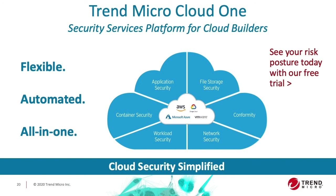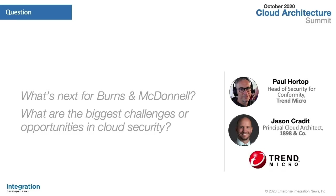Q&A: What's next for Burns & McDonnell? Jason: We're going to continue to build. We have ideas in the energy space around helping customers monitor and understand capital asset planning. We can take tools into heavily regulated environments feeling more secure because we have partners like Amazon and Trend Micro in our corner. We also want to help our customers build and benefit from our hard-won experiences.